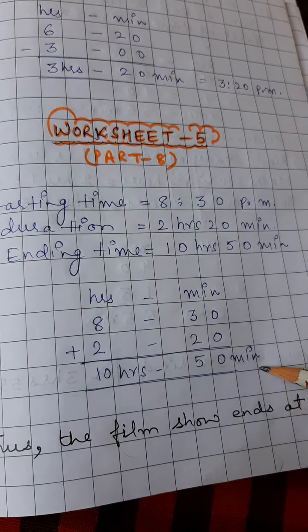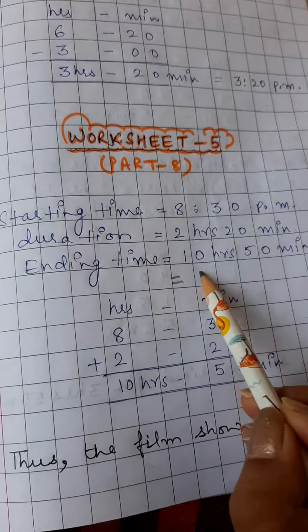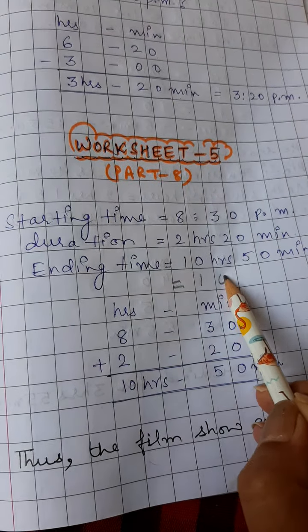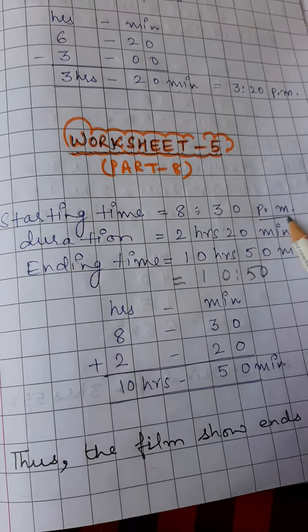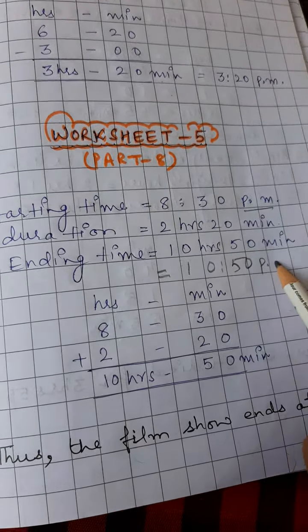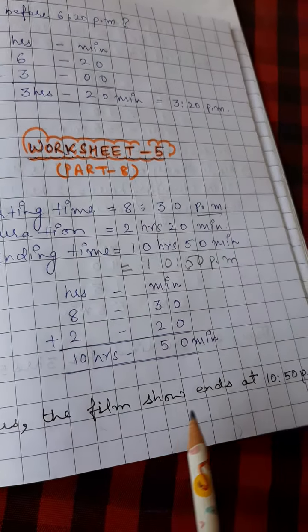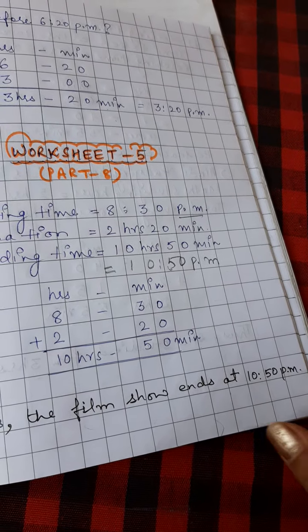So your time will be equal to 10.50. The ending time should be, this is 10 hours 50 minutes means 10.50, because it is pm, so we will write pm here. 10.50pm. So in the end, you can write, thus the film show ends at 10.50pm.